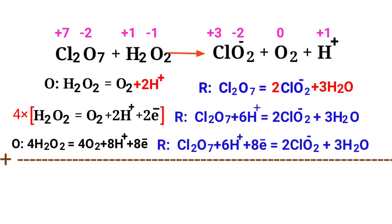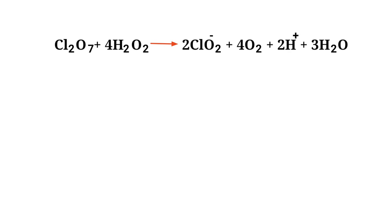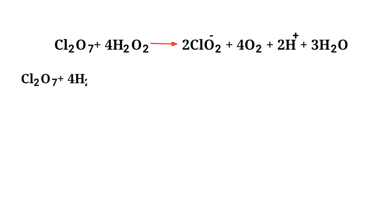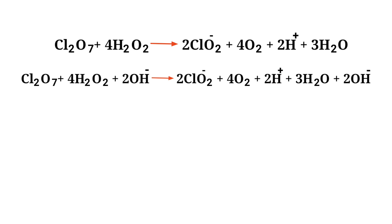Add both reactions and cancel the same terms. For a reaction in a basic medium, add one OH⁻ ion for every H⁺ ion present in the equation. The OH⁻ ions must be added to both sides to keep charge and atoms balanced.